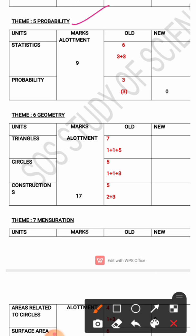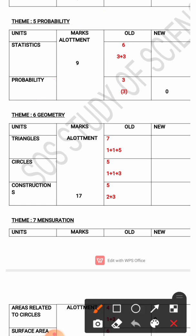Theme 5 is Probability. The lessons under this theme are Statistics and Probability. The total marks allotment is 9 marks. In the previous year's paper, Statistics had 2 questions — 3-marks each — for a total of 6 marks. For the Probability lesson, 3 marks were allotted. However, this year the Probability lesson is deleted, so there will be no marks allotment for it.